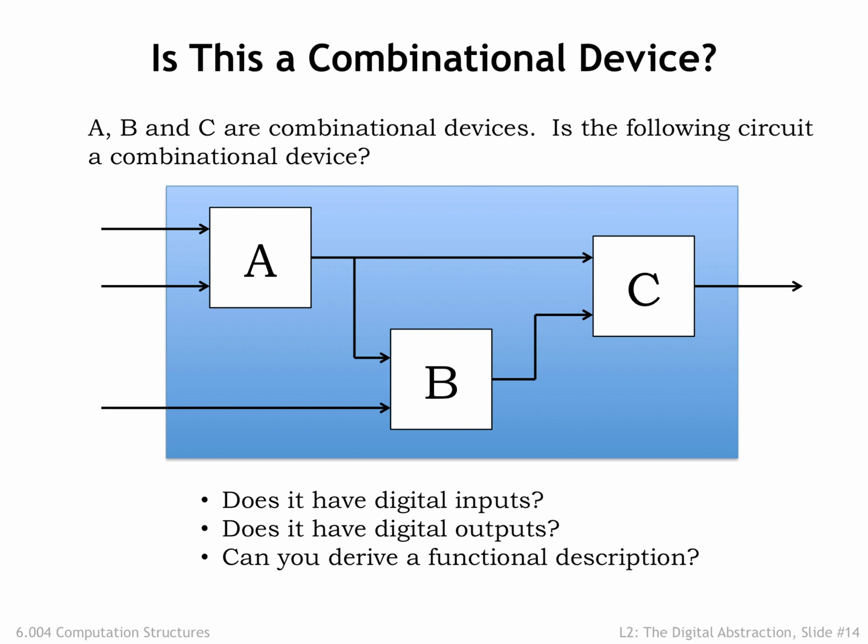Finally, since we've now determined the values on all of C's inputs, we can compute its output value using C's functional specification. In general, since there are no cycles in the circuit, we can determine the value of every internal signal by evaluating the behavior of the combinational components in an order that's determined by the circuit topology.